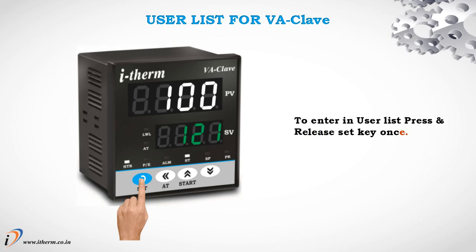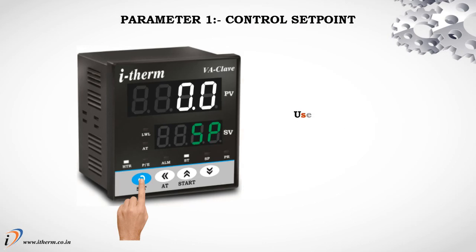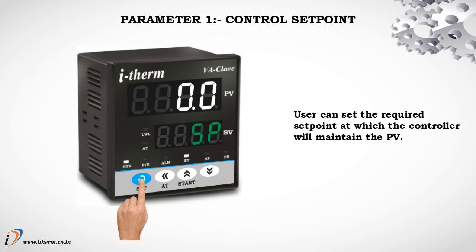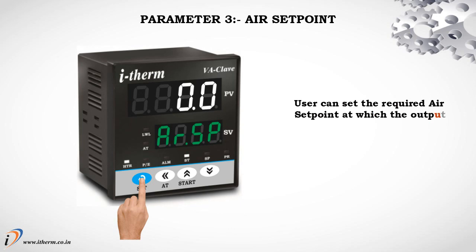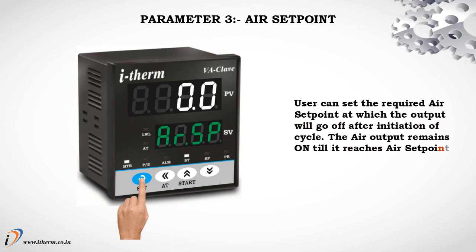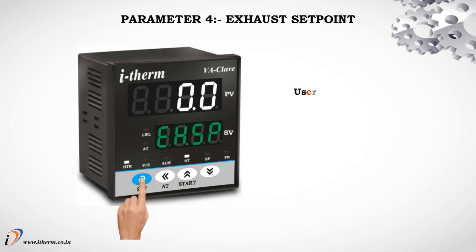User List for VACLEV. To enter the user list, press and release the Set key once. Parameter 1: Control Setpoint. The user can set the required setpoint at which the controller will maintain the process value. Parameter 2: Soak Time. The time base for the soak timer is in minutes. Once the process value reaches the set value, the soak timer starts decrementing. Parameter 3: Air Setpoint. The user can set the required air setpoint at which the output will go off after initiation of the cycle. The air output remains on until it reaches the air setpoint.